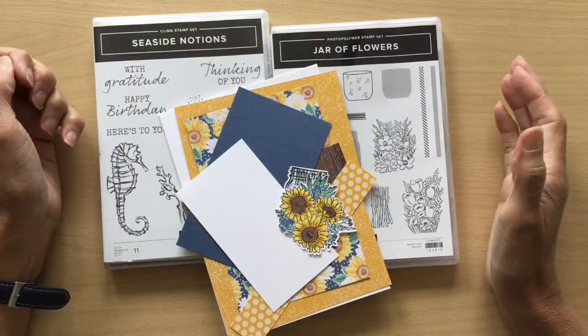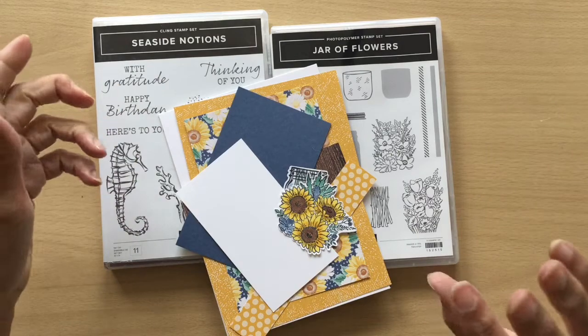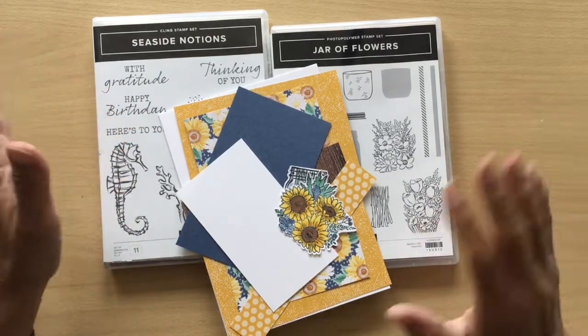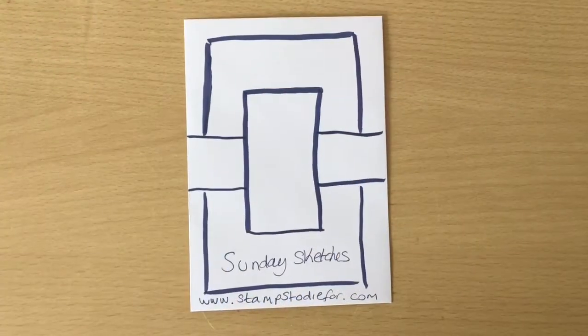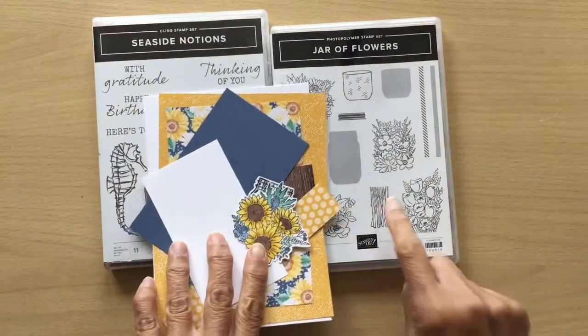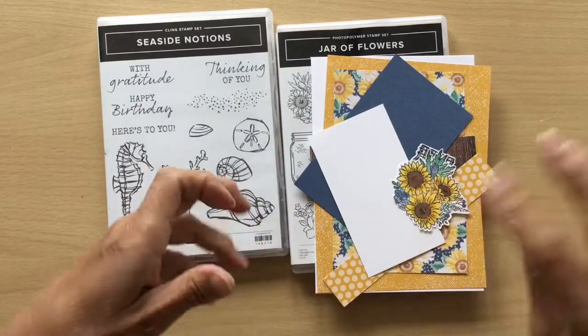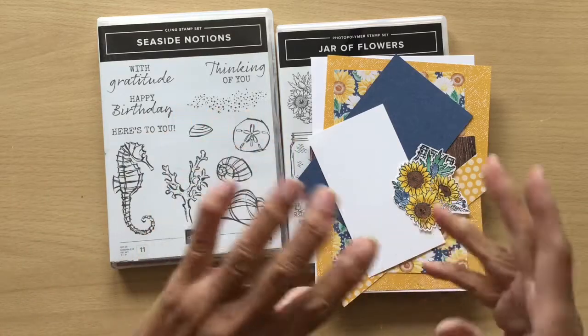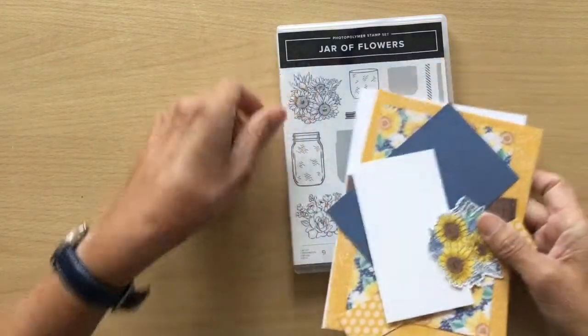My name's Linda, I'm a UK independent Stampin' Up demonstrator. I'm making two cards today. I was whizzing through my Pinterest the other day and a card sketch came up and I thought, well I've not done one of those for ages. So I'm going to be working on this card sketch, making two cards. The first one's going to be with jar of flowers, second one I'm going to be using the seaside notions. I'm just going to show you, using the same card sketch, we can make slightly different, they're not radically different cards.